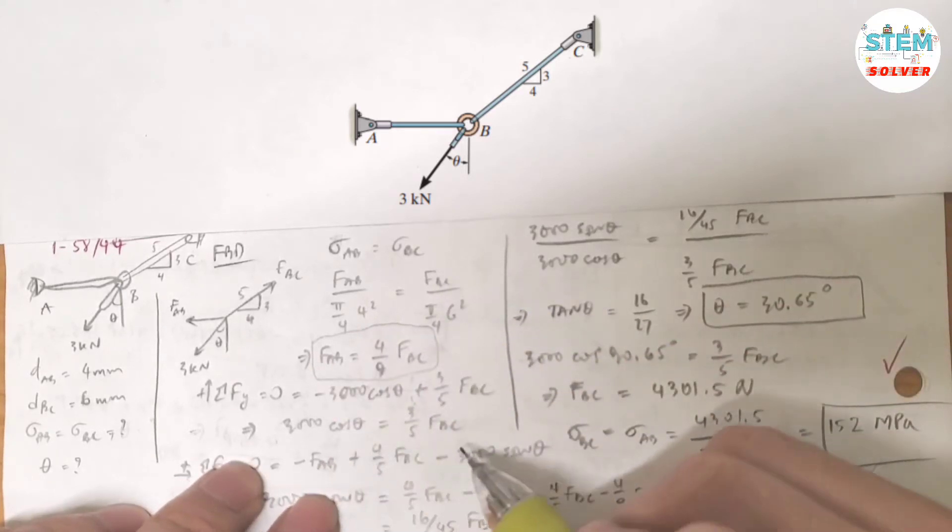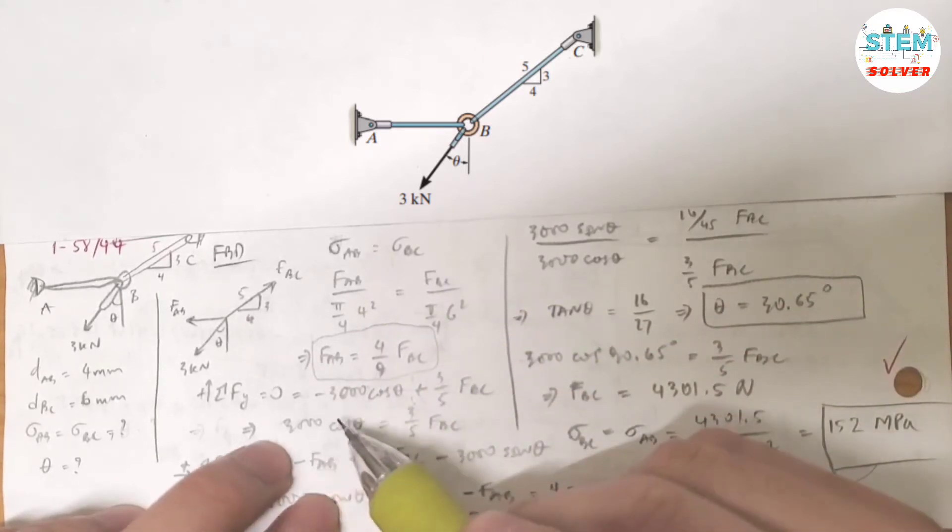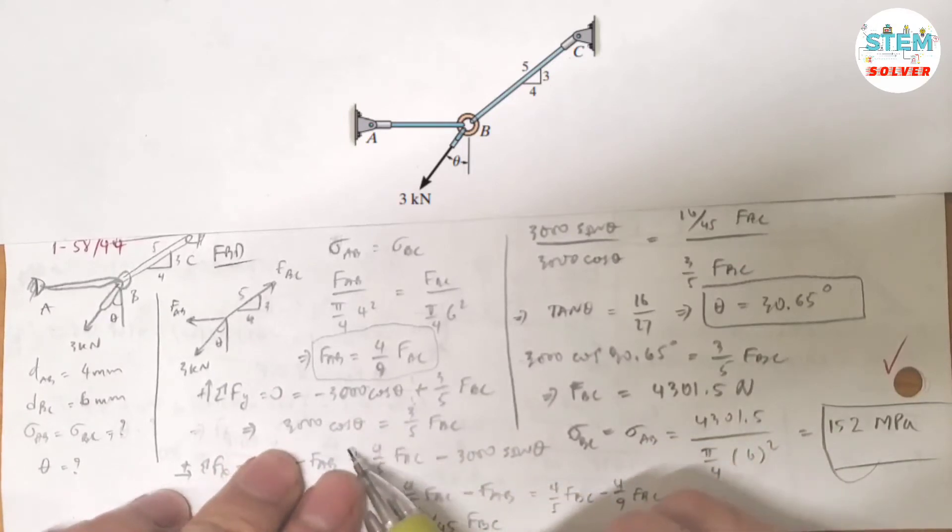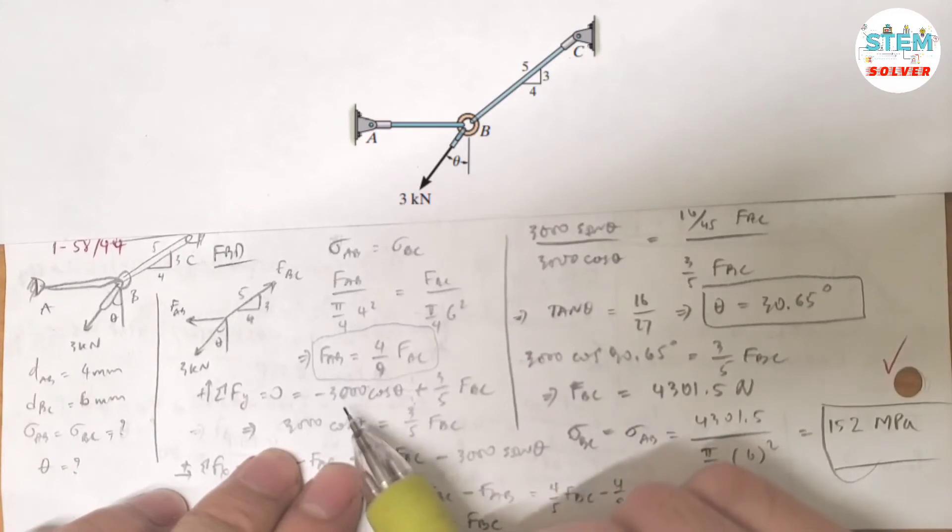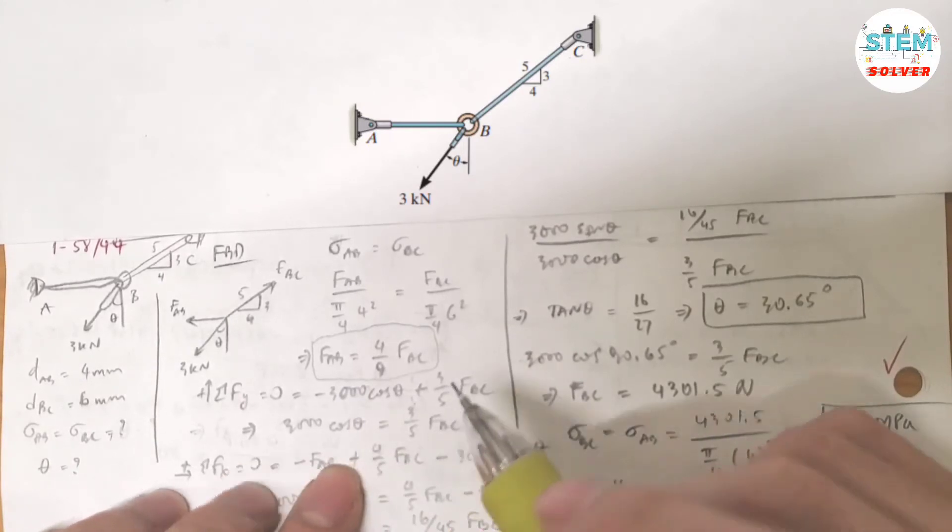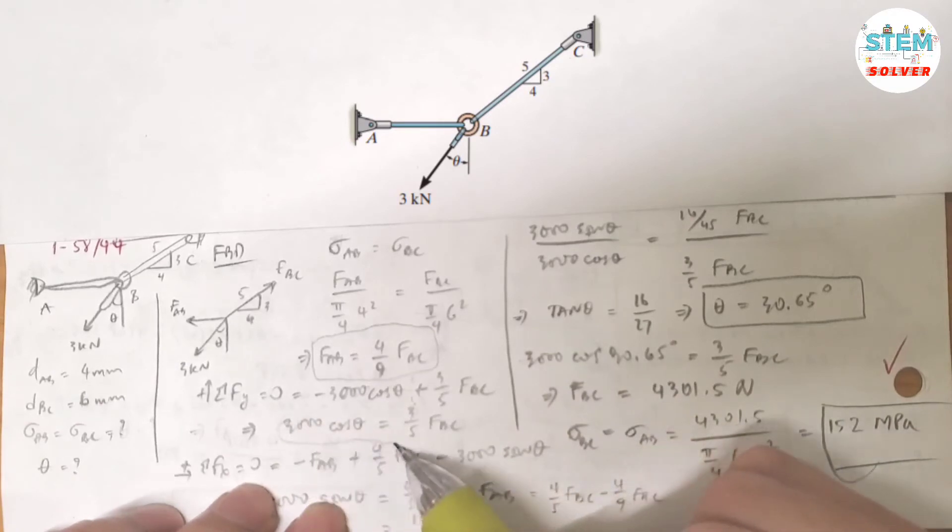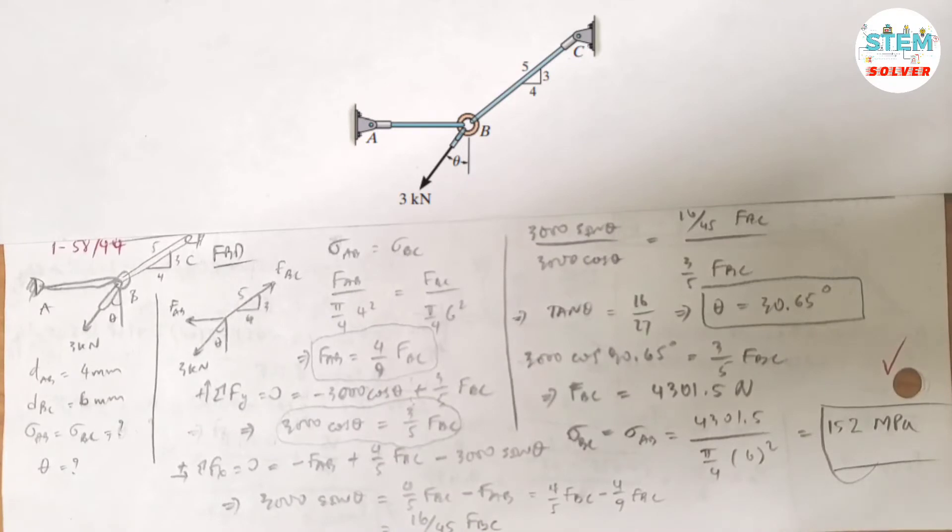Then you solve for, then you found that. So I'm going to simplify this. I have 3000 cosine theta equals 3/5 FBC. Here's another expression equation. So keep in mind that again.